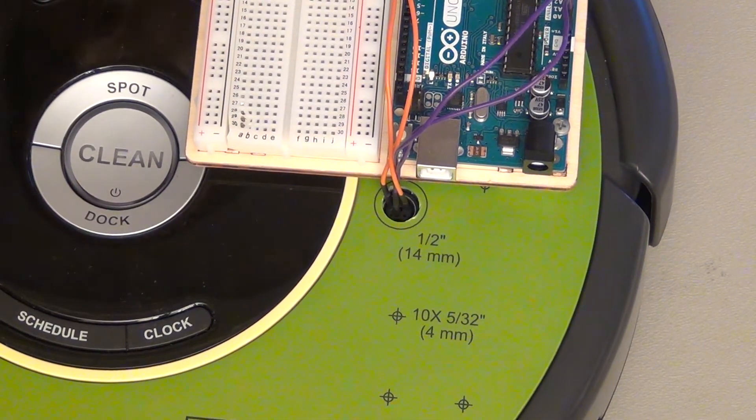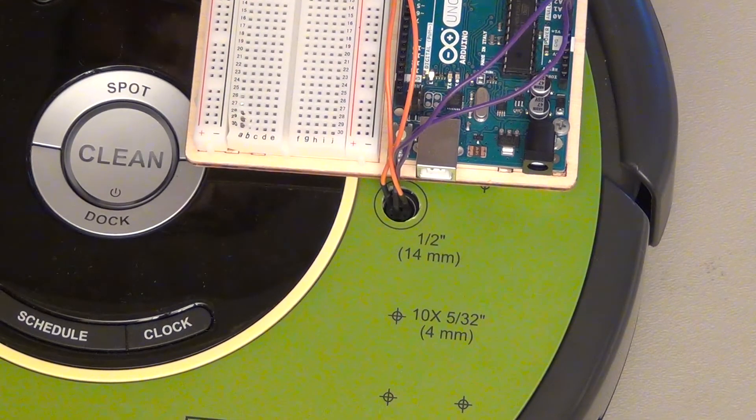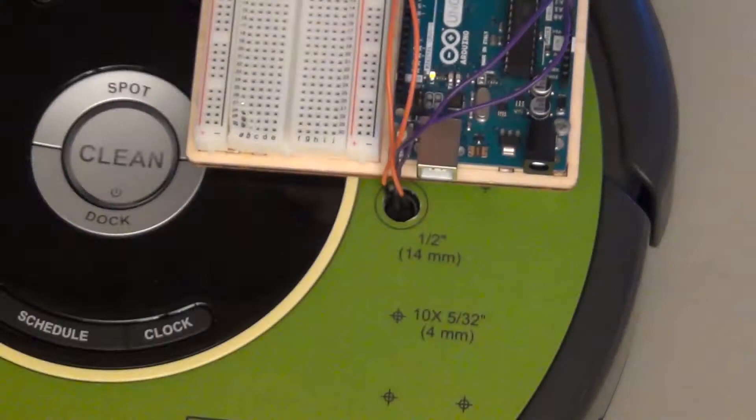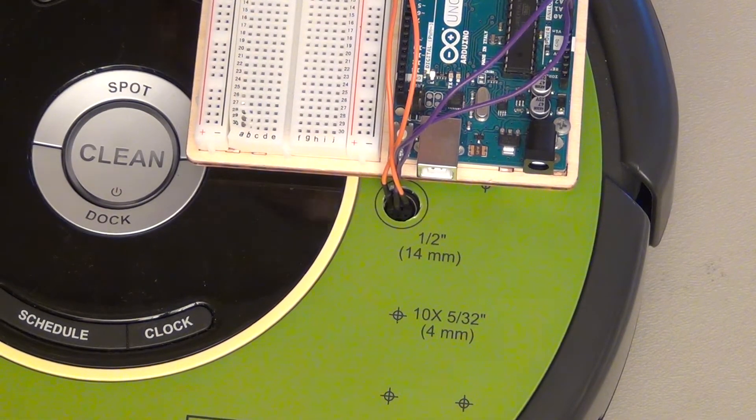But just for reference, the lower baud rate is 19,200. That's in the code, which I'll also put in the description of this video. Thanks for watching.